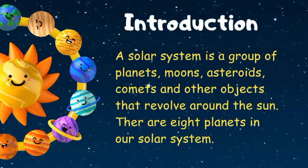A solar system is a group of planets, moons, asteroids, comets, and other objects that revolve around the sun. There are eight planets in our solar system.